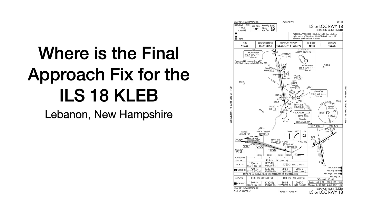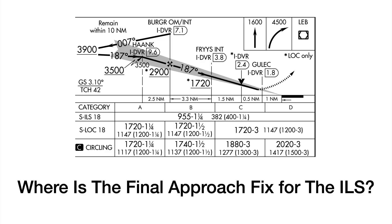So where's the Final Approach Fix for this one? It's Lebanon, New Hampshire — the ILS to 18 KLEB. I have links below in the show notes so you can pull that chart up. Zooming into the profile view — where is the Final Approach Fix for the ILS? The Final Approach Fix is 3,500 feet right there, glide slope intercept. If you look at the outer marker, HANK, you should be at 3,500 feet when you're on the ILS, and that's where you should have an indication on your altimeter of 3,500 feet. It's good cross-checking when you're doing your approach.